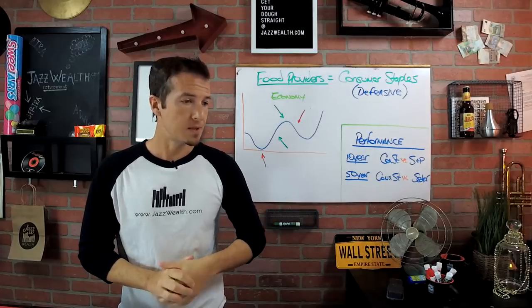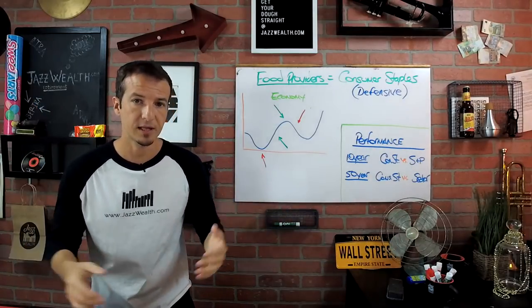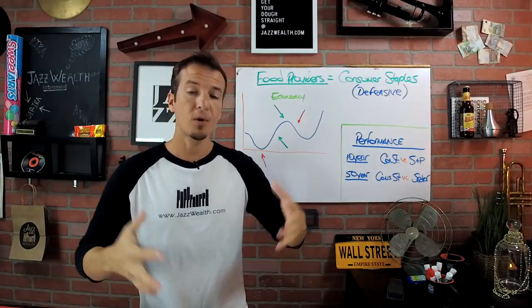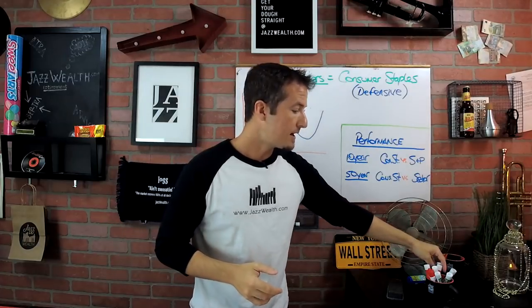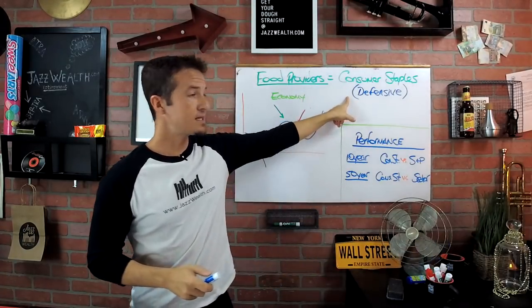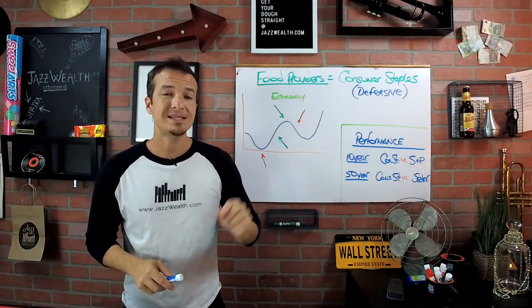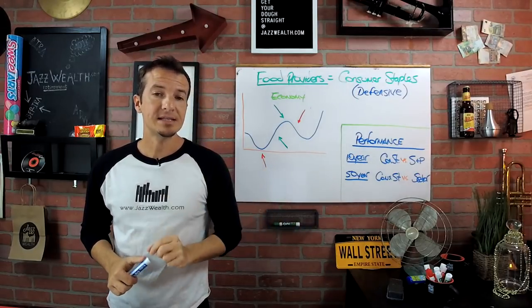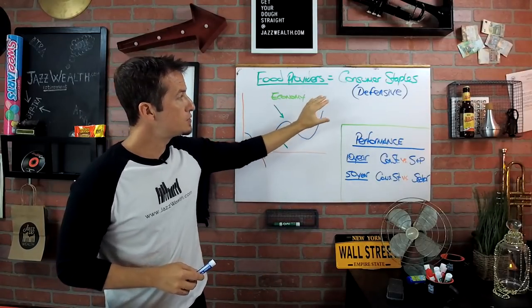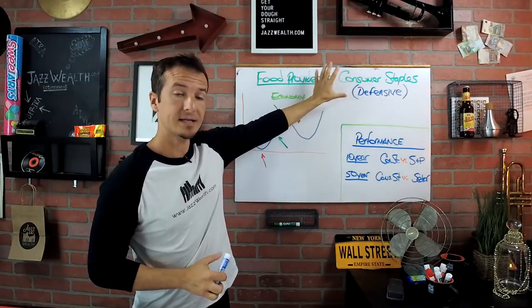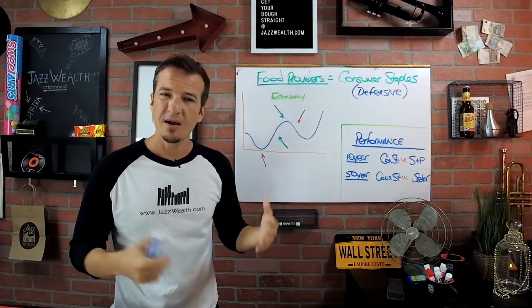If the economy is down, they're going to continue to buy cigarettes. Today we're going to talk about food. These are products - the butter that I mentioned - people are going to buy butter whether the economy is doing good or bad. If you like butter, people may buy some ice cream or whatever it may be.